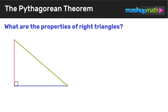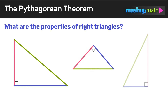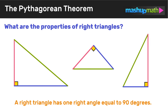Before we move on to any practice problems, let's make sure we really understand the properties of right triangles. A right triangle is a triangle that has one right angle, and a right angle is equal to 90 degrees. You'll see in these three triangles how it makes that L shape, and that little box represents the right angle.